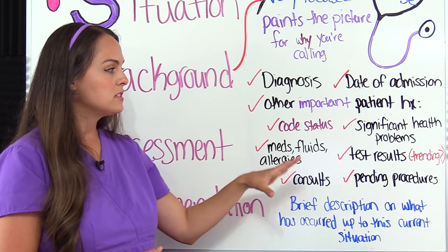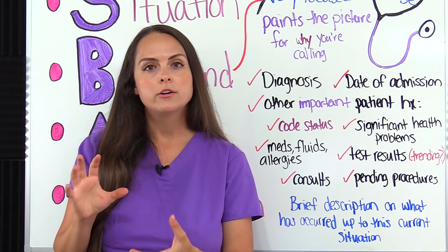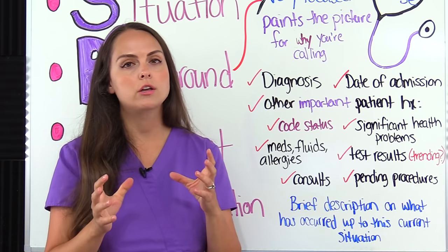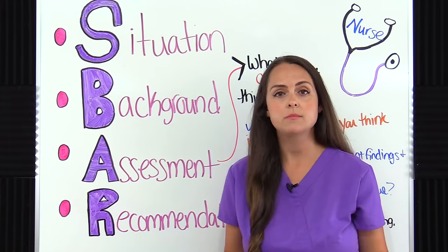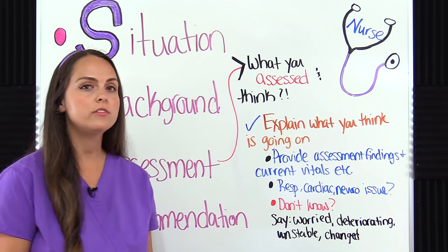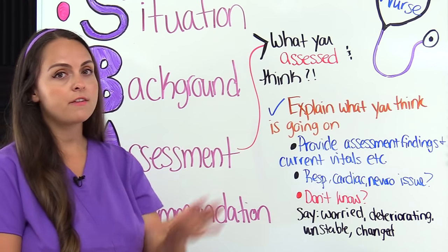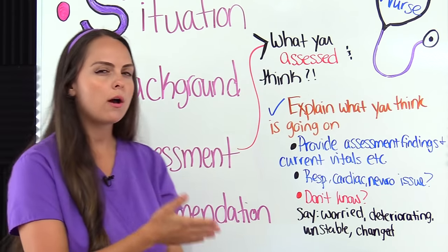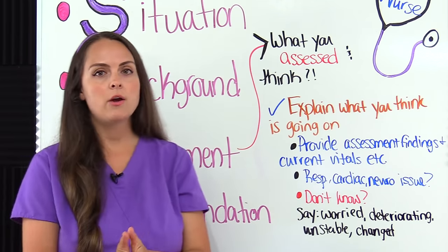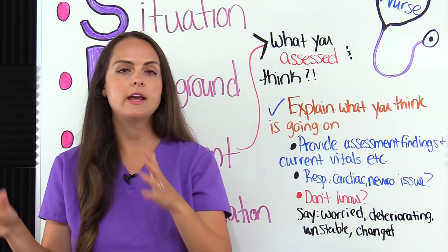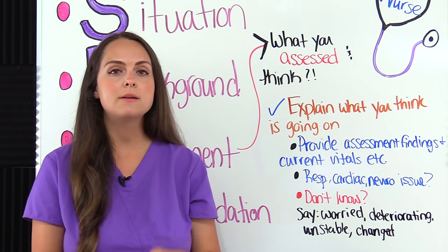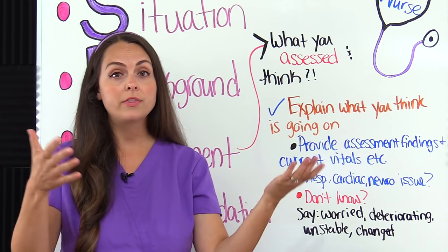At the end of this video we're going to go over a scenario so you can see how you tailor the background section when communicating a patient's history. The next component communicated is the Assessment, where the nurse tells the listener what they have assessed — what they have found in that patient and what they think is going on based on those findings. The nurse will explain what they think is possibly a respiratory issue, cardiac issue, GI issue, etc., and then provide those assessment findings and current vital signs to back up what they think is going on.